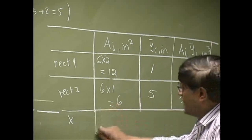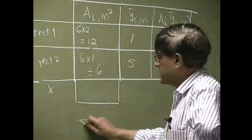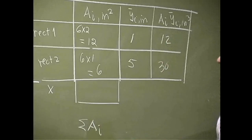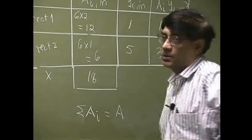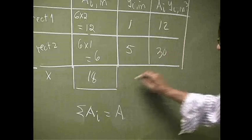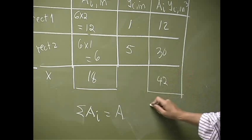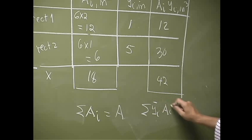We add everything here. That's going to be sum of the areas. And that's really the total area in this case. And that's 18. Then we sum this column. That's 42. And that's the sum of y_i bar and A_i.